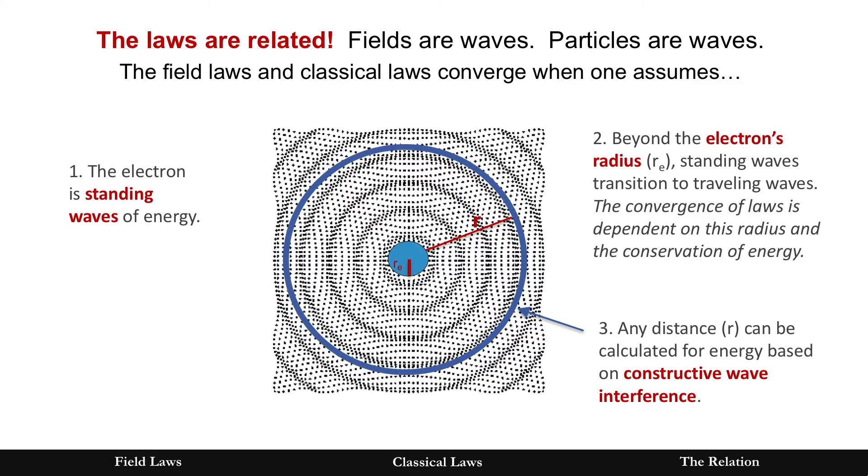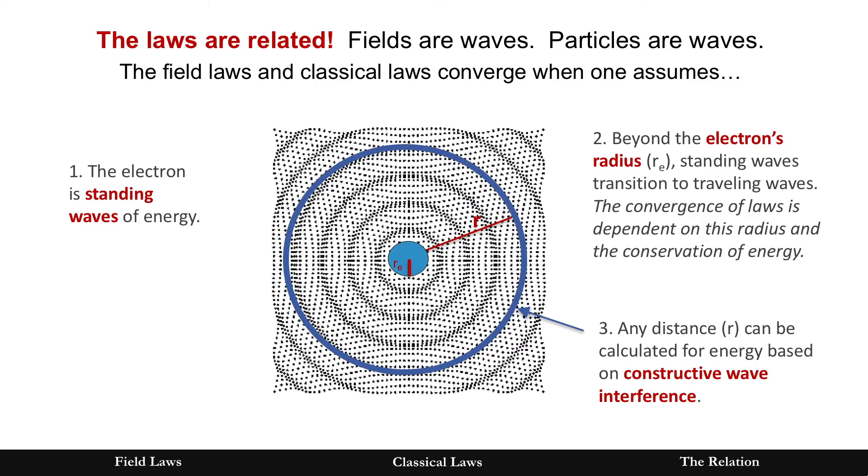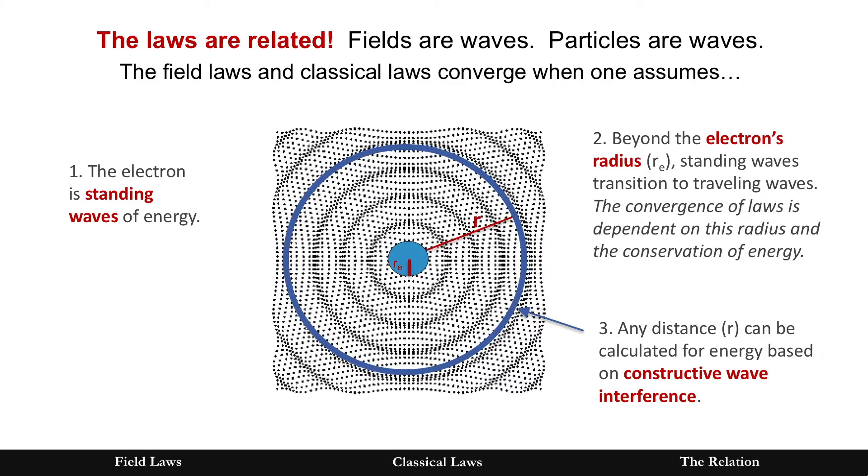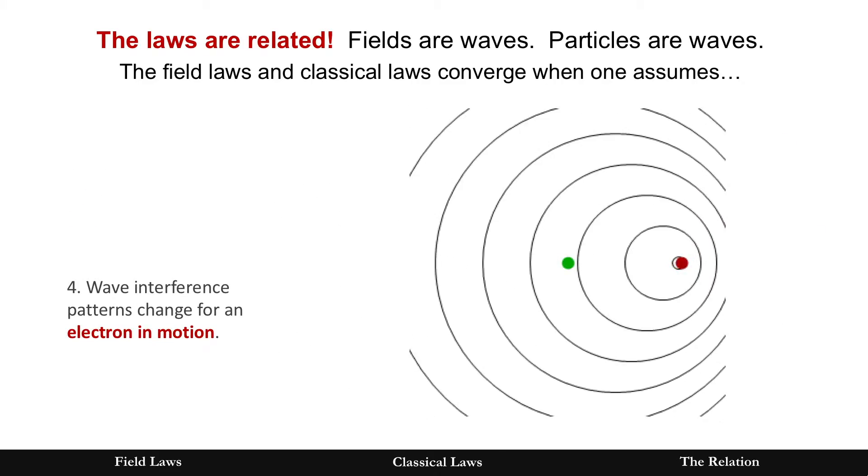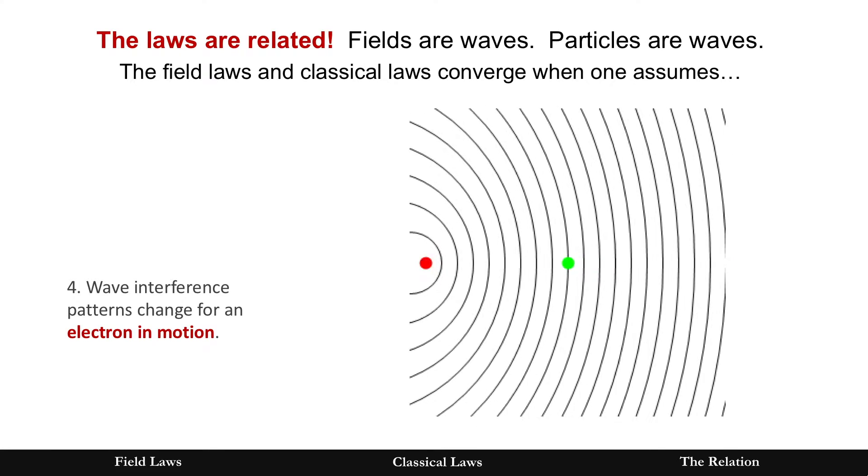For two different types of waves, and this is also important: longitudinal or transverse. Lastly, wave interference patterns change for an electron that is in motion.